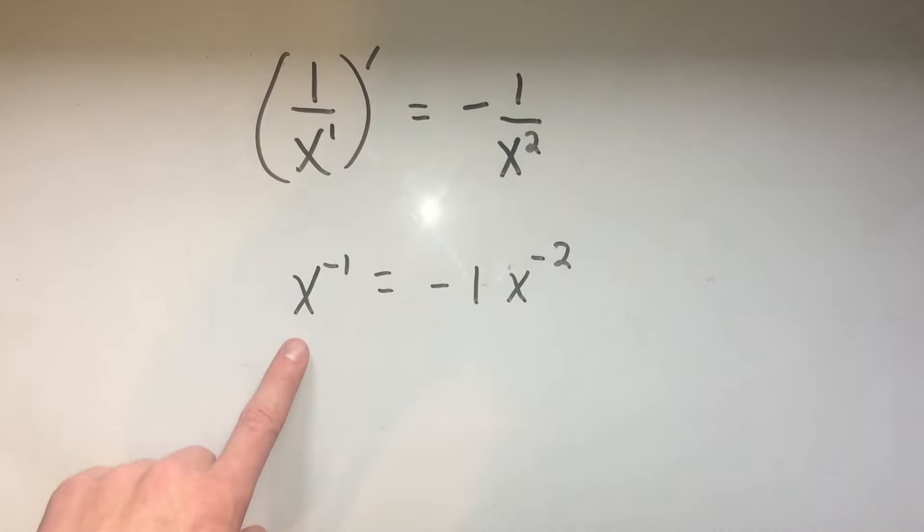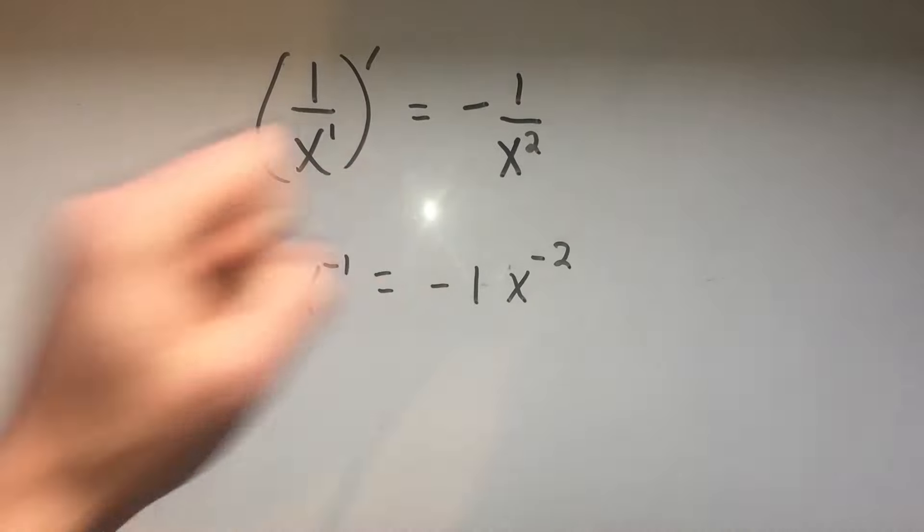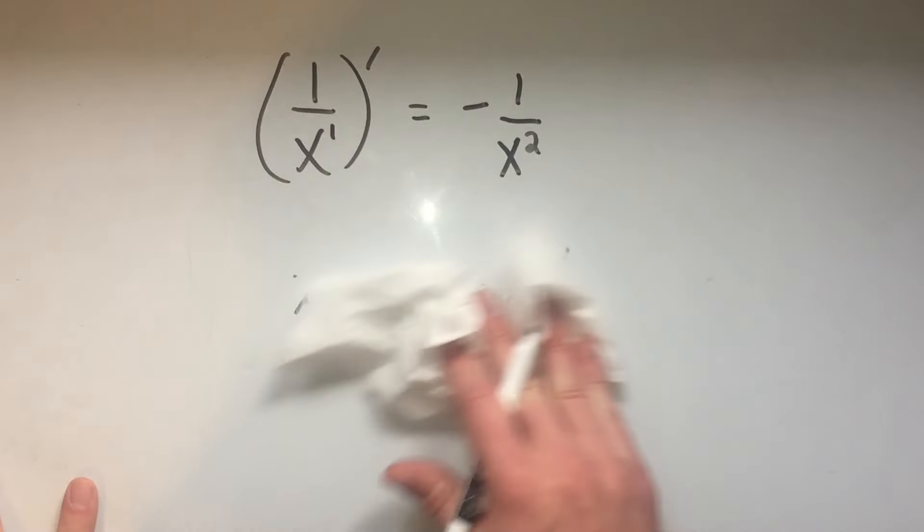So sometimes if you have to do a lot of these, this gets time consuming. So that's why I just remember the rule, flip the sign, multiply by the power in the denominator, and then add one to the power in the denominator. Let me show you another one.